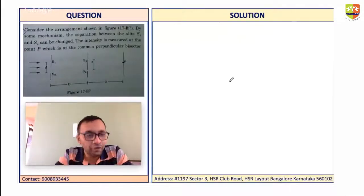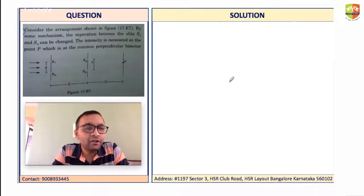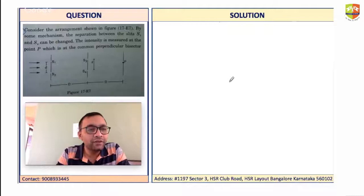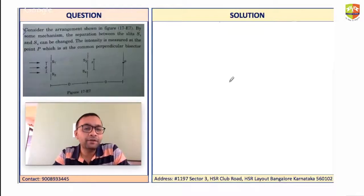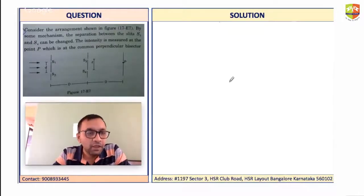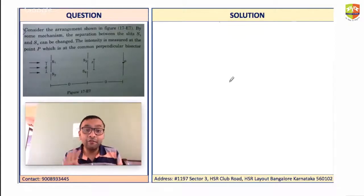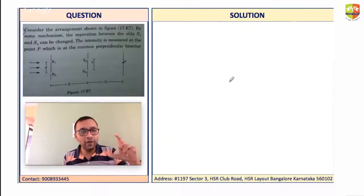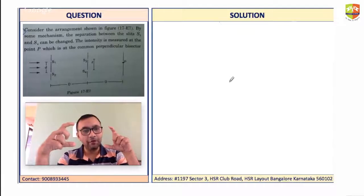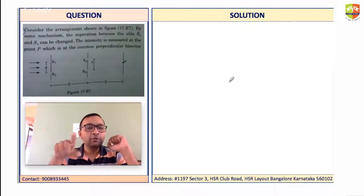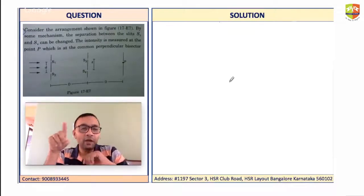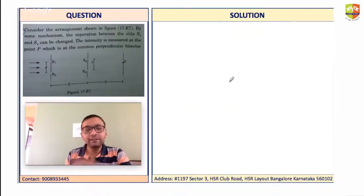Here is a question on wave optics. Consider an arrangement shown in the figure — by some mechanism the separation between slits S3 and S4 can be changed. This is a bit different from routine Young's double slit experiment questions. Here we have four slits: two at one end and two at a distance d from it, with a point P on the common perpendicular bisector. We need to find the intensity measured at point P.